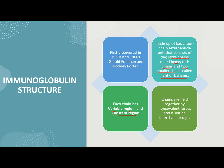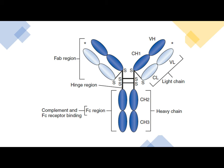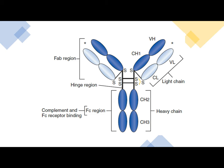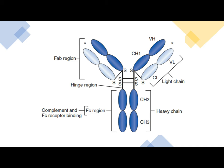The chains are held together by non-covalent forces and disulfide interchain bridges. If you take a look at the immunoglobulin structure, you would see there are different regions. The antibodies are made up of a FAB and an FC region.